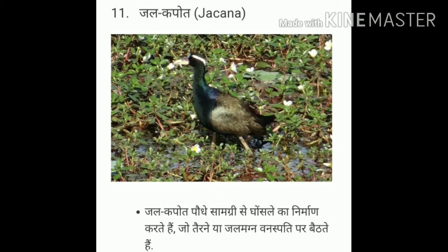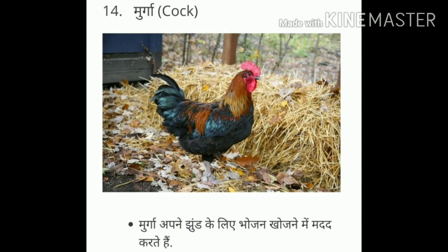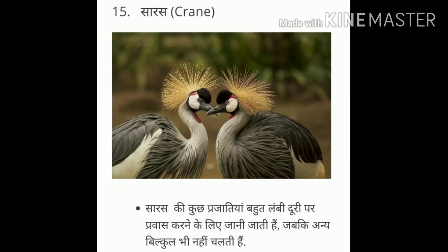Twelve, Goraya — sparrow. Thirteen, Bharat — lark. Fourteen, Murga — cock. Fifteen, Saras — crane. Sixteen, Koyal — cuckoo.